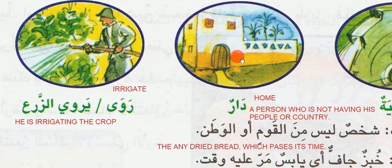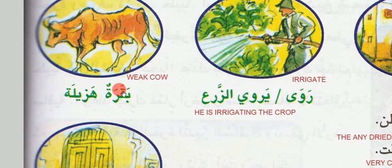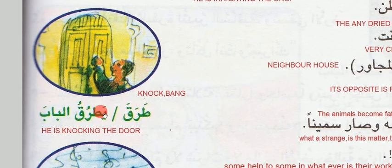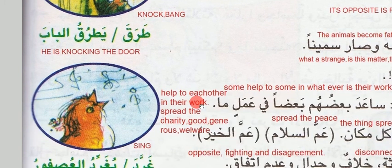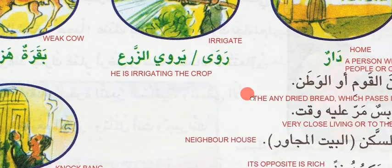Dar refers to a particular home, a full home — not flats and similar things. Ravi, yarvi al-zara — he is irrigating the crop. Baqra al-hazeela — weak cow, or the cow is weak. Tarakah — he is knocking. Yatrakul baab — he is knocking the door. Knocking or bang, we say tarakah. Qarrad means sing. Yaghrad al-soor — the bird is singing or crying. You can use either word for qarrad.